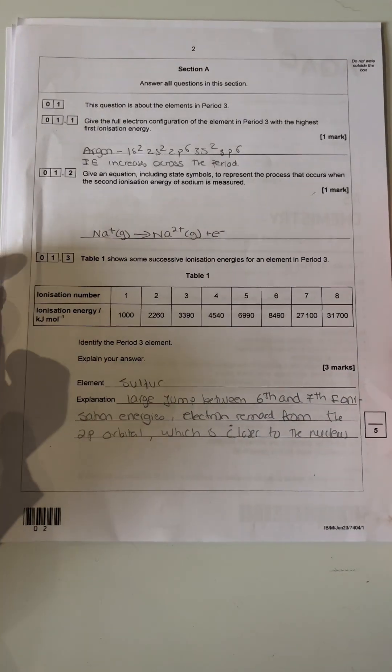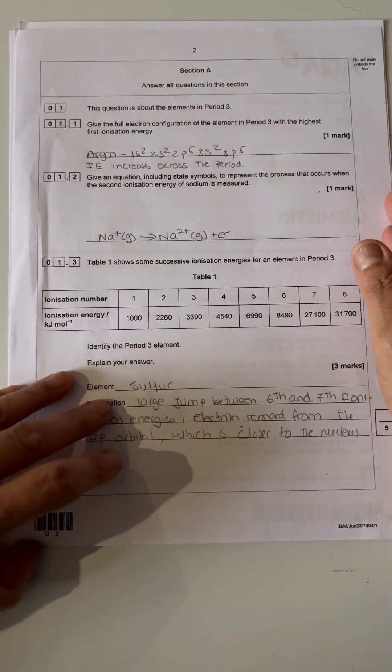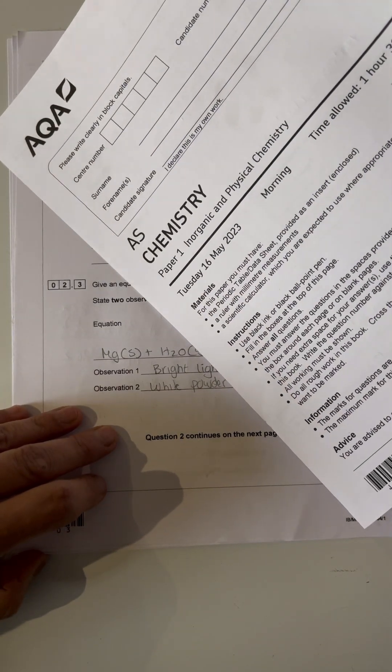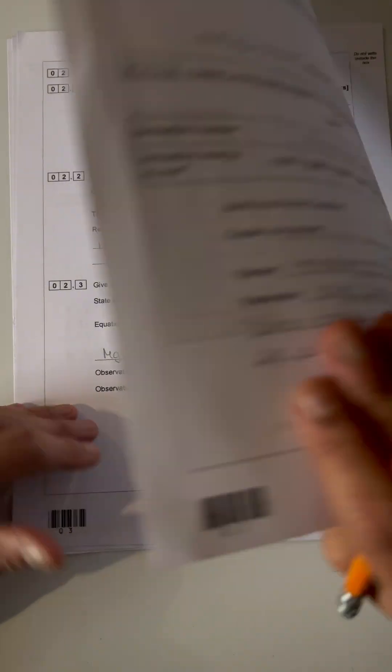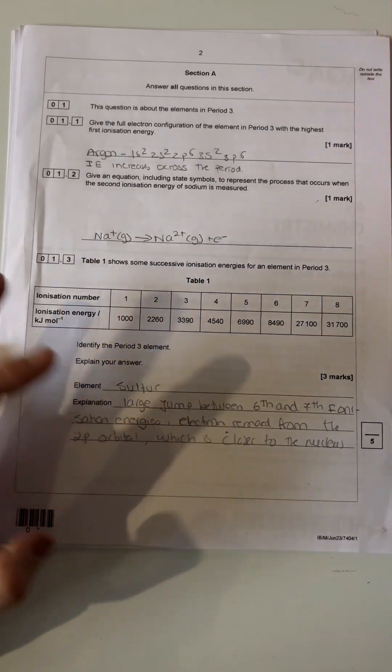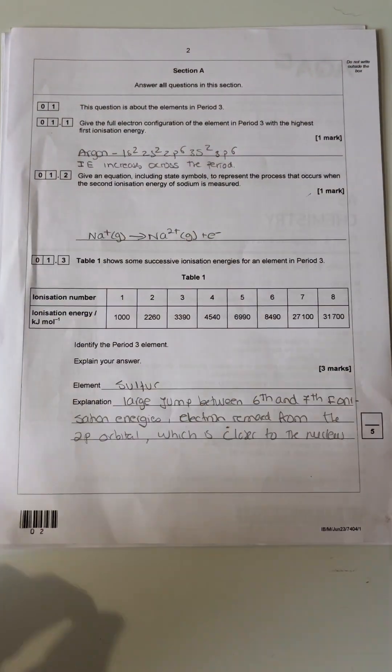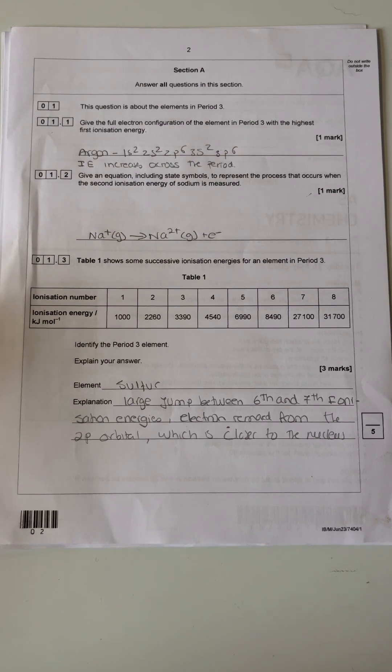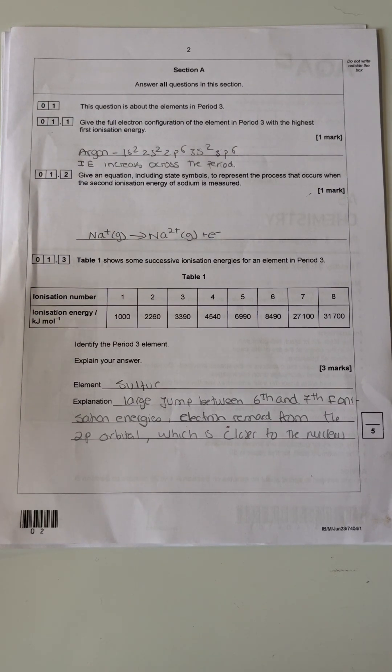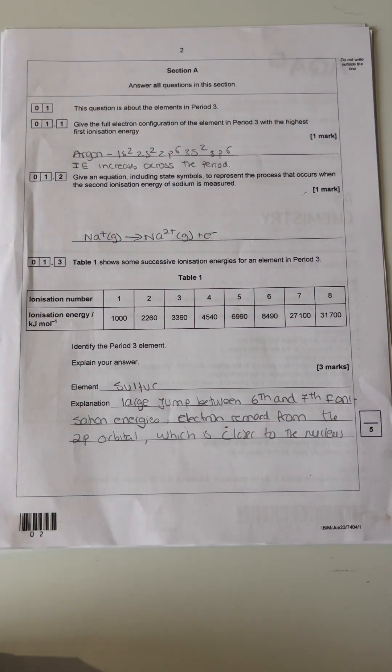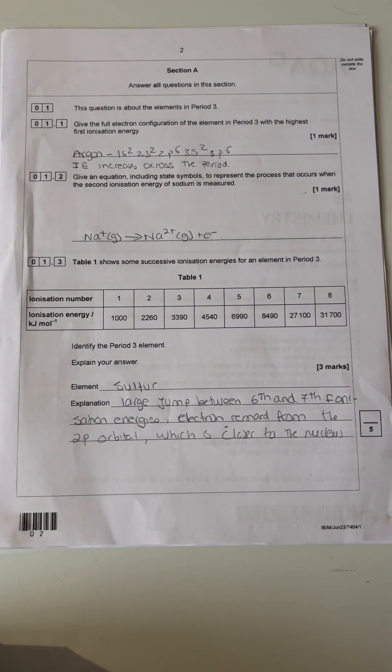Right, today we can start with paper 2023, which is chemistry paper one in organic and physical chemistry. I'm going to go through the paper and talk about the topics. Before I start, I'd like to ask you to please subscribe to my channel, and if you like it, tick the like button and share with your friends if you think it's a good channel to watch. Thank you.